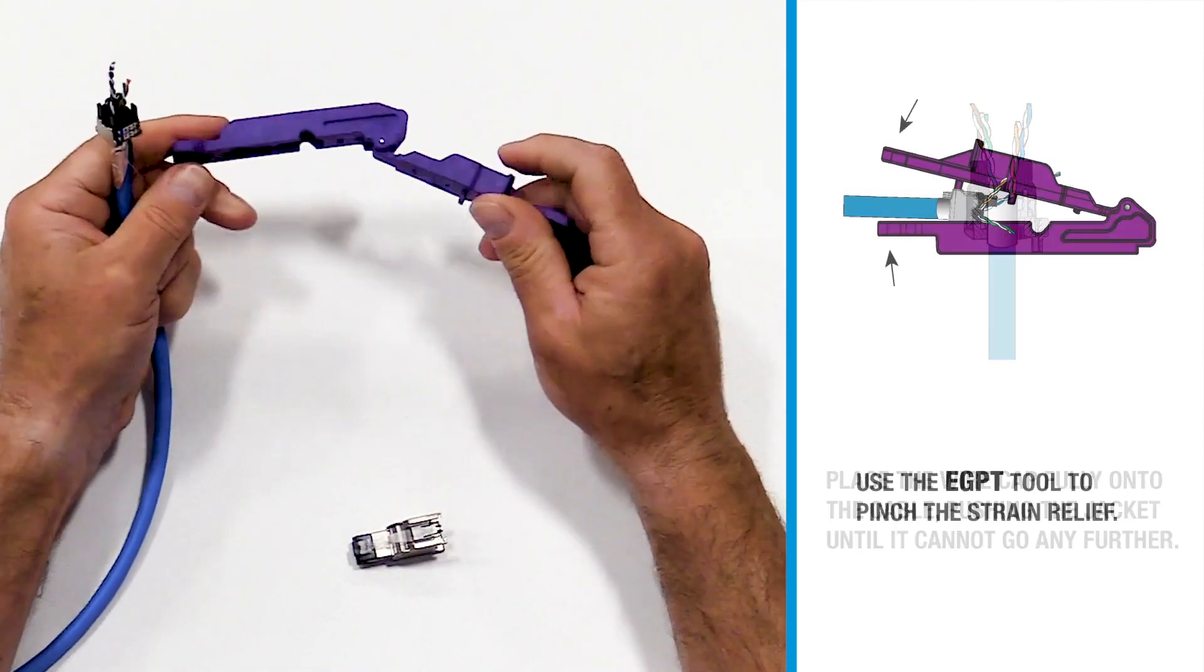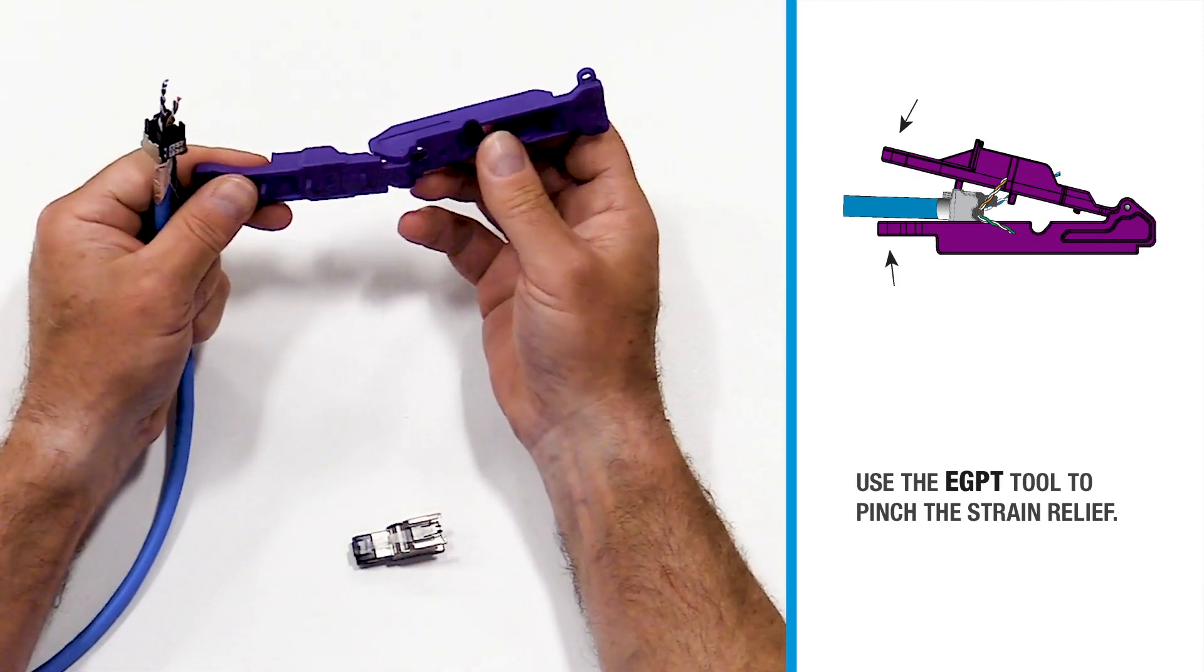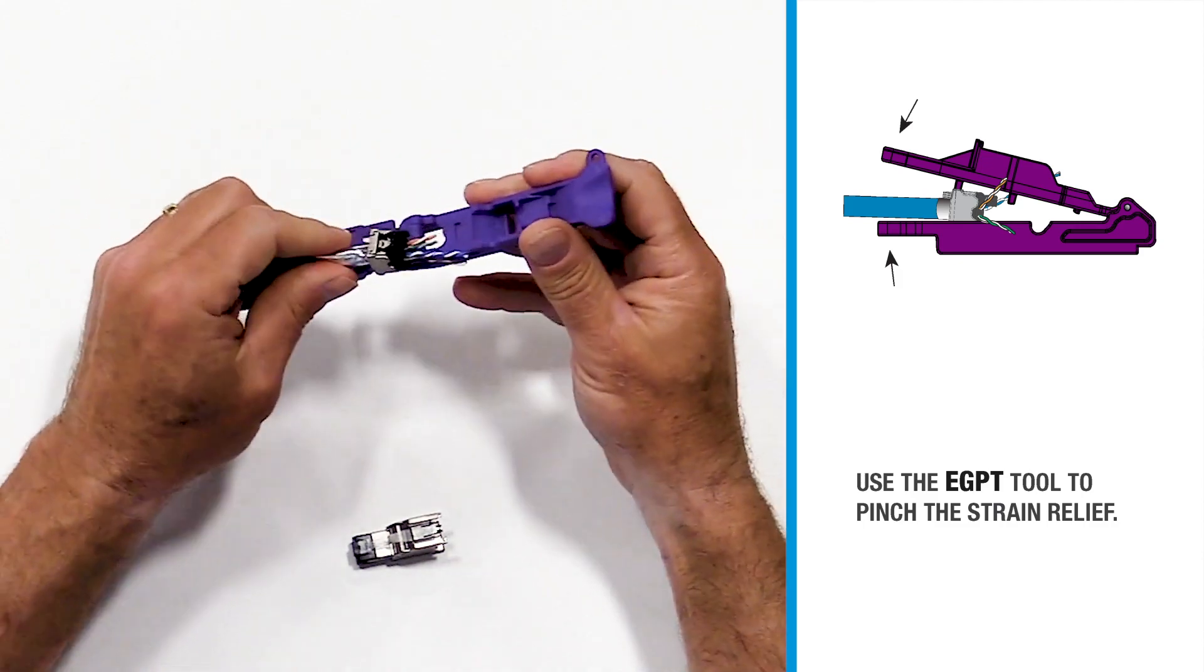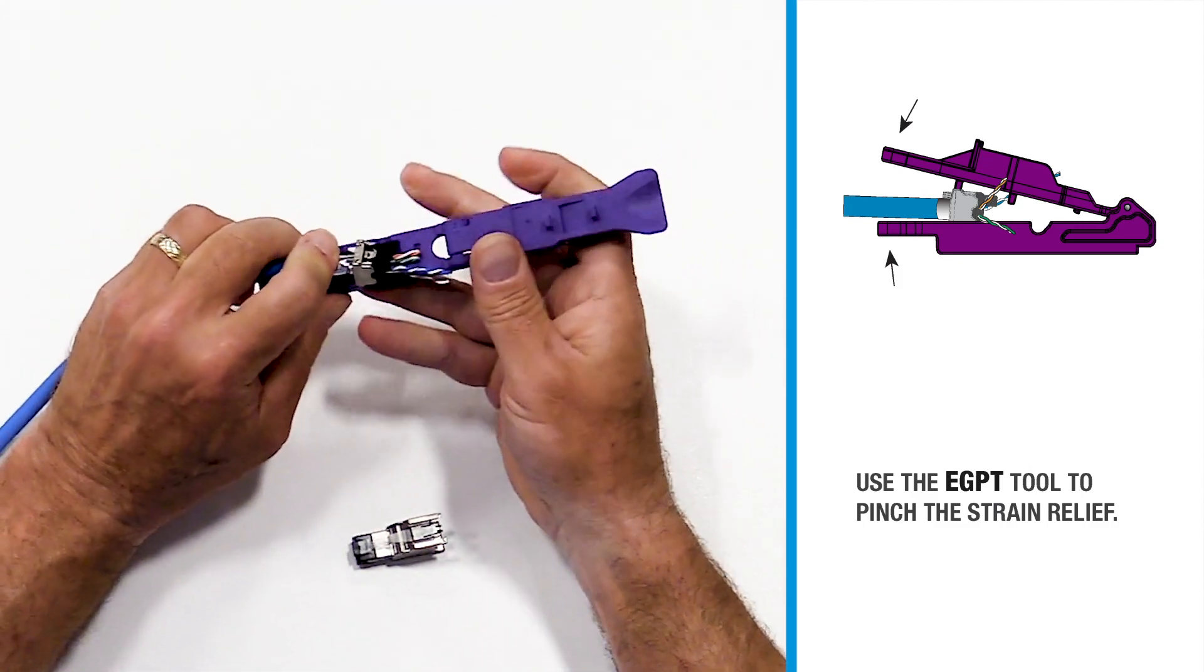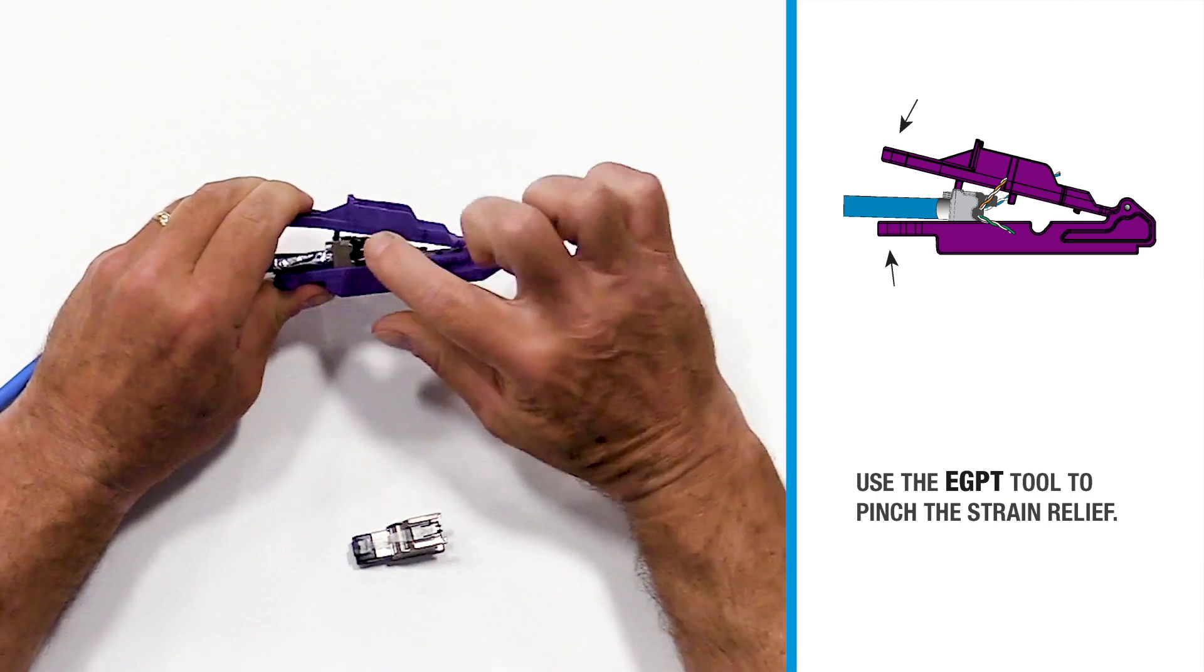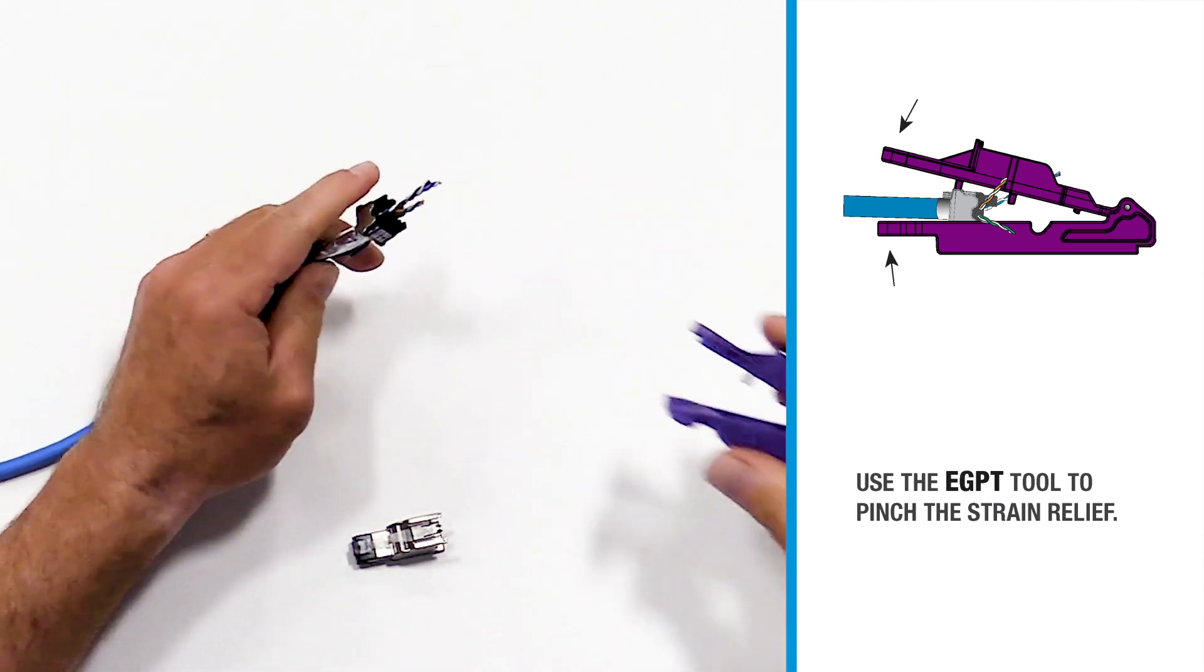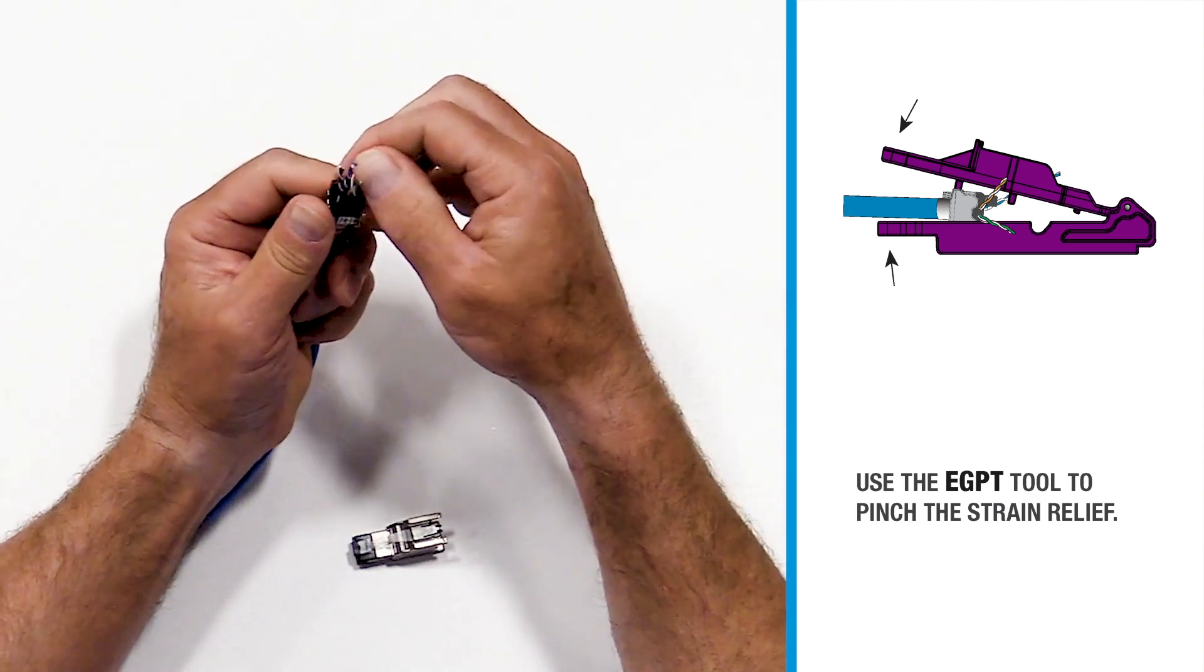Using the EGPT tool, you will place the wire cap inside the tool and you will pinch the strain relief tighter so that the wire cap grips onto the jacket, which will allow it to not come out of place.